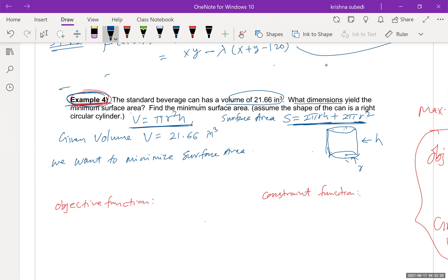So objective function will be surface area. Let us represent that by S equals, the formula is 2 pi r h plus 2 pi r square. So S, the function of r and h, that is our objective function.